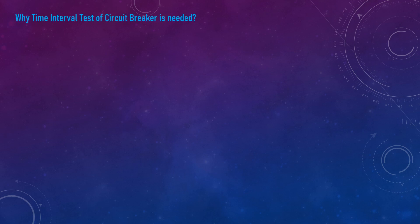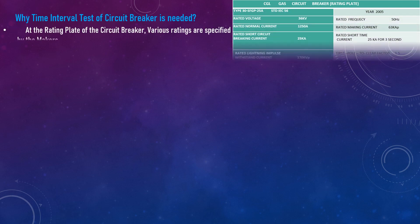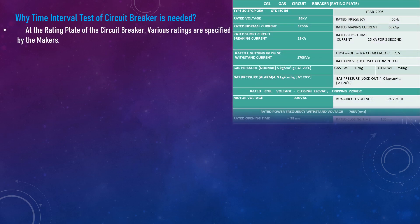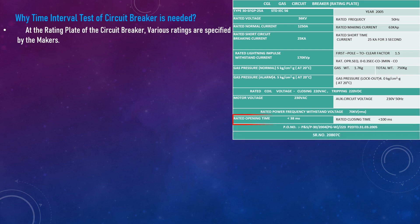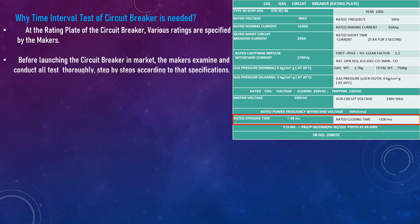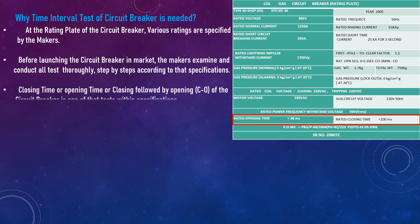Why is the time interval test of a circuit breaker needed? At the rating plate of the circuit breaker, various ratings are specified by the makers. Before launching the circuit breaker in the market, the makers examine and conduct tests thoroughly step by step according to the specifications. Closing time, opening time, or closing followed by opening time of the circuit breaker is one of those tests within specification.